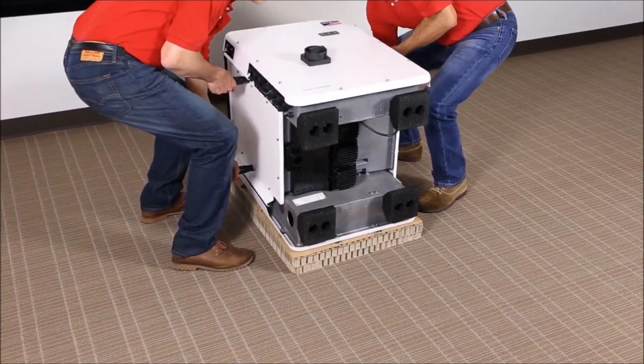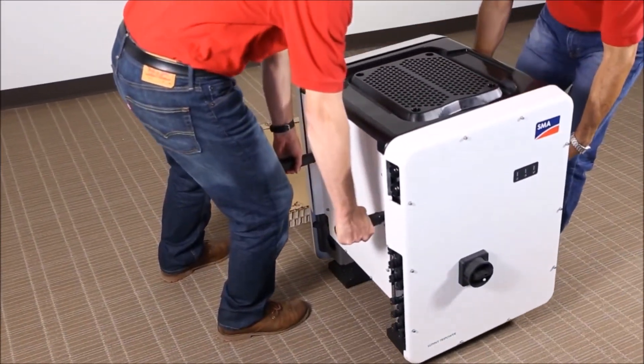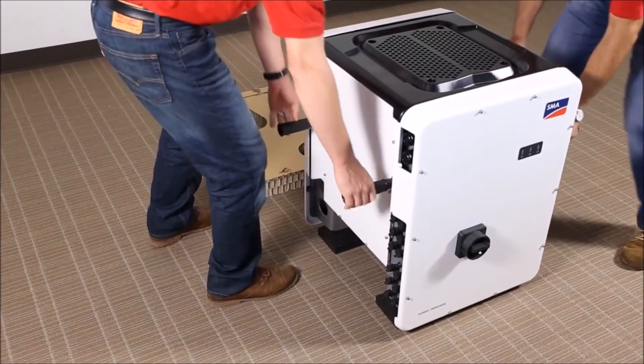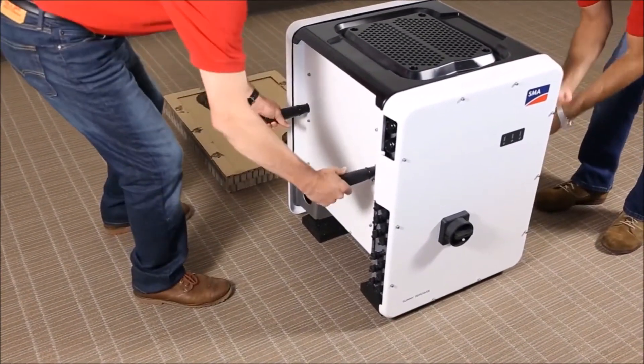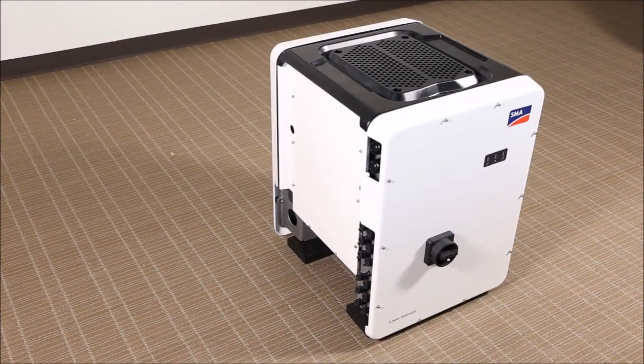After ensuring that all four handles are adequately tightened and attached to the inverter, we can proceed to the next step, which is lifting the Core 1 by the handles and placing it in its final location. It is important to remember that the weight of the inverter is approximately 180 pounds, so always make sure that this is at least a two-person job.